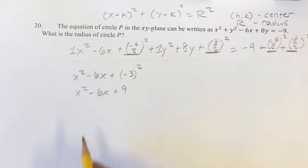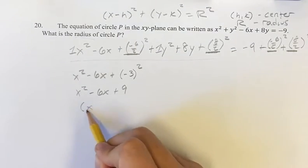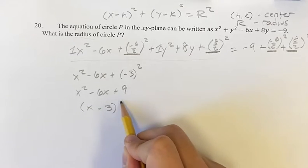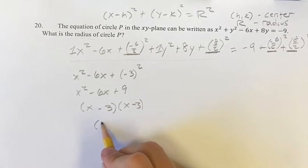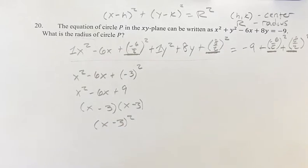And so how do we get this into this form? Well, you have to recognize this is a form of x minus 3 times x minus 3 is x minus 3 squared. So that's what that would look like.